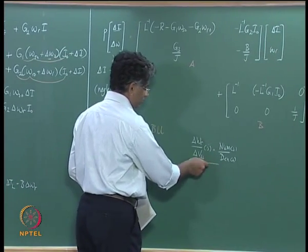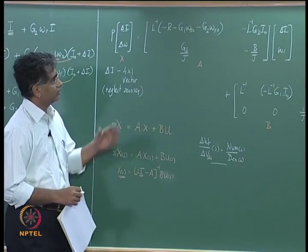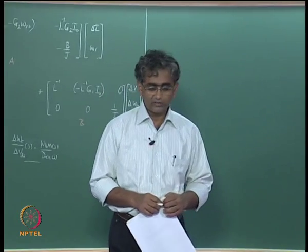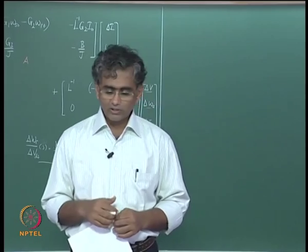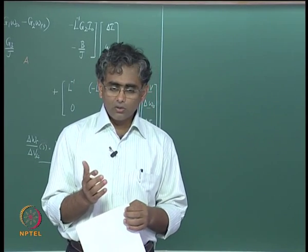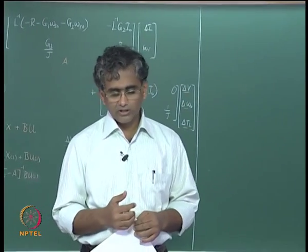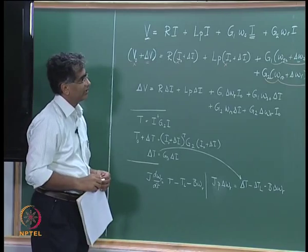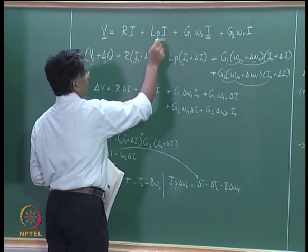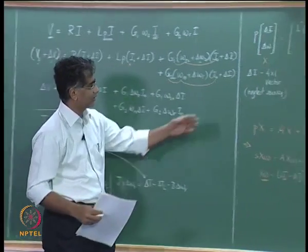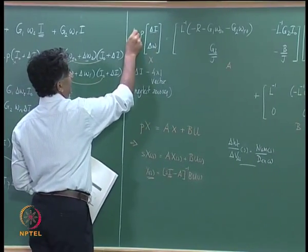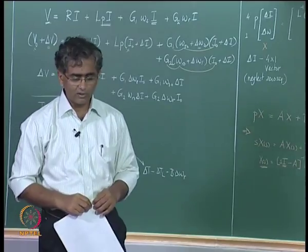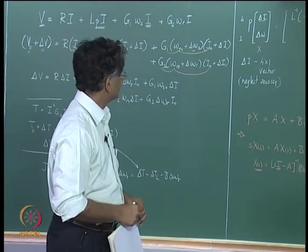Similar analysis as done for DC machines can be performed using this small signal representation. However, for closed-loop control of induction machines it becomes necessary to simplify the machine equations further. The electrical subsystem equation involves four current variables plus one rotor speed variable, making it a fifth-order differential equation and fairly involved for controller design.